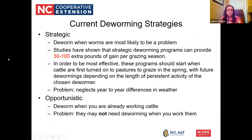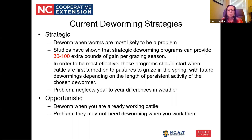Some current deworming strategies: strategic deworming — probably done the most — means deworming when worms are most likely to be a problem. Studies have shown that strategic deworming programs can provide 30 to 100 extra pounds of gain per grazing season. That's huge, regardless of market prices. Your return on investment with deworming is great. To be most effective, these programs should start when cattle are first turned onto pastures to graze in the spring. Future dewormings depend on the length of persistent activity of the chosen dewormer, though the downside is this approach neglects year-to-year differences in weather.